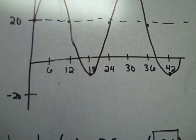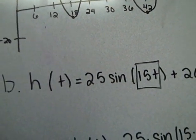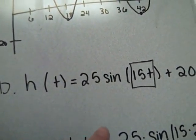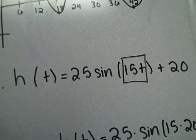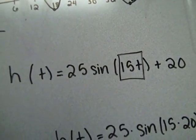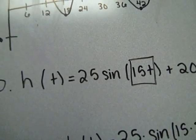And then b was find the angular velocity of the Ferris wheel. And in the equation it has 15t and that is the angular velocity so it's 15 degrees per second.